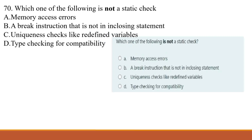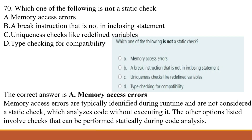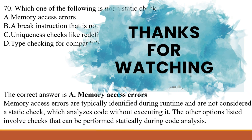Question 70: Which one of the following is NOT a static check? A) memory access error, B) a break instruction that is not in a closing statement, C) uniqueness check like redefined variables, D) type checking for compatibility. The correct answer is A, memory access error. Memory access errors are typically identified during runtime and are not considered static checks, which analyze code without executing it. The other options involve checks that can be performed statically during code analysis.